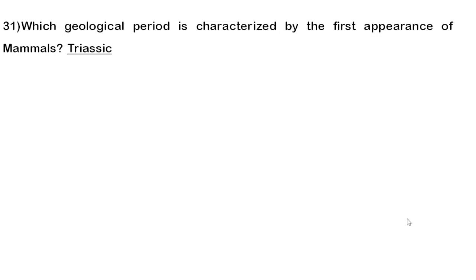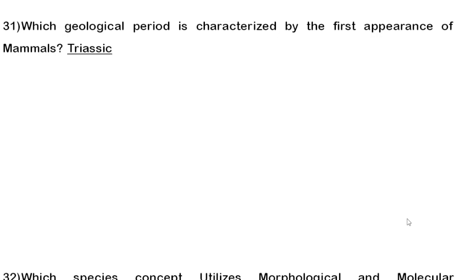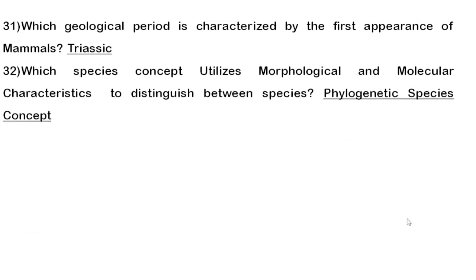Thirty-first question: the geological period characterized by the first appearance of mammals is the Triassic period. You should also know in which period dinosaurs went extinct and in which geological time point angiosperms first appeared. Geological time periods are very important for the exam.